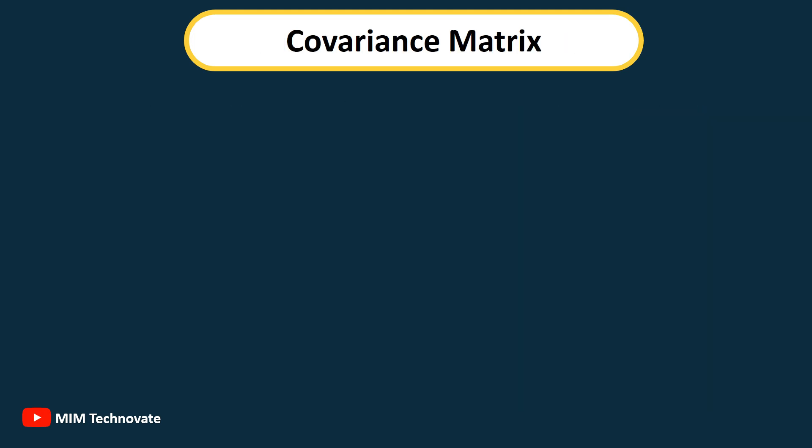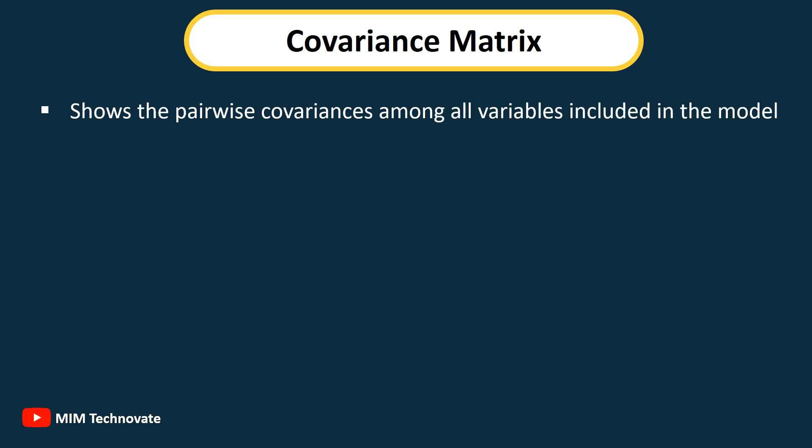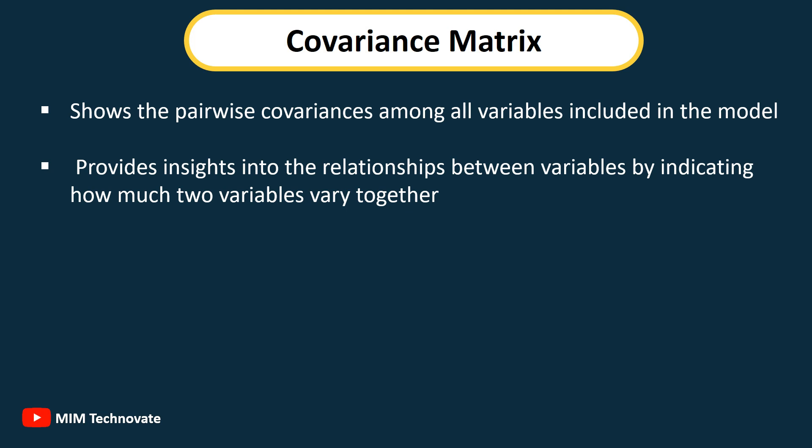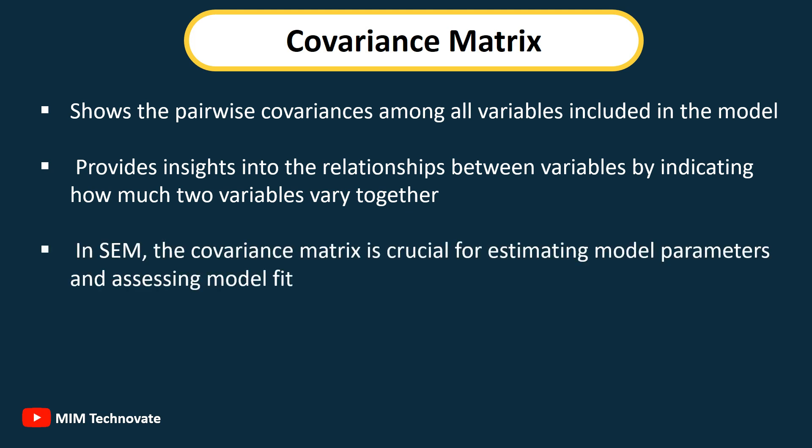Covariance Matrix: Shows the pairwise covariances among all variables included in the model. It provides insights into the relationships between variables by indicating how much two variables vary together. In SEM, the covariance matrix is important for estimating model parameters and assessing model fit.